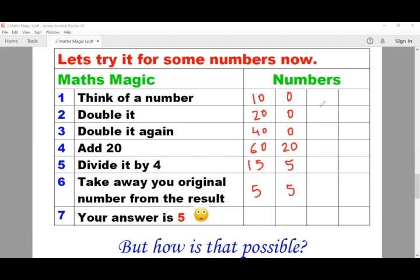Right, let's think of a negative number now — negative 2, say. Doubling it will give me minus 4. Doubling it again will give me minus 8. And adding 20: you have to be very careful here because minus 8 add 20 will give me positive 12. Dividing it by 4 will give me 3. And from 3, we have to take away negative 2. You know that two negatives together will always give you a positive. So 2 plus 3 will give me 5.